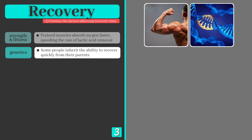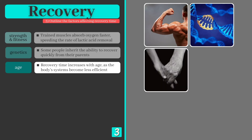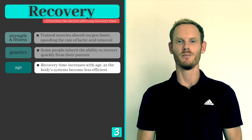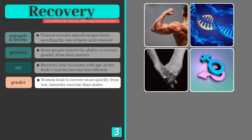Number two is genetics, and some people simply inherit the ability to recover more quickly from their parents, while others naturally take longer for their bodies to return to a resting state. Next we have age, and unsurprisingly older people tend to take longer to recover. The efficiency of their cardiovascular and respiratory systems decline over time, limiting their ability to deliver oxygen to those fatigued muscle cells. Gender also plays a significant role, and studies have shown that women tend to have a greater resistance to fatigue than males, particularly at low to moderate intensities.